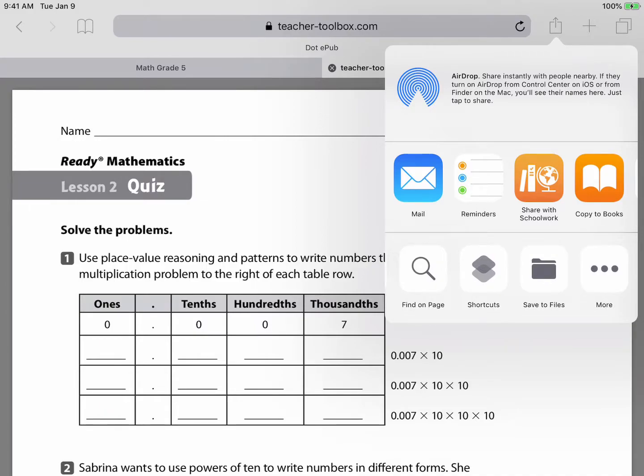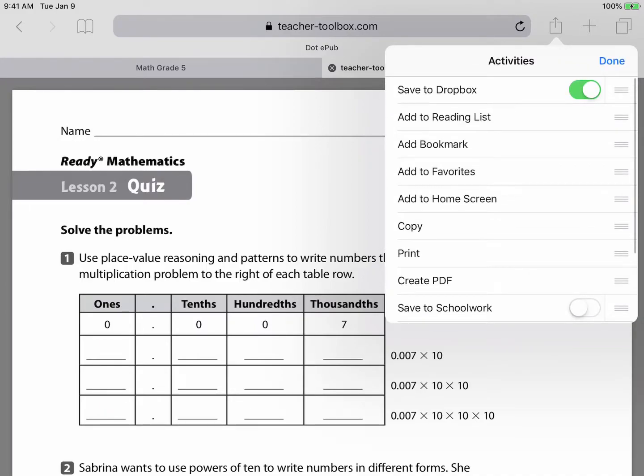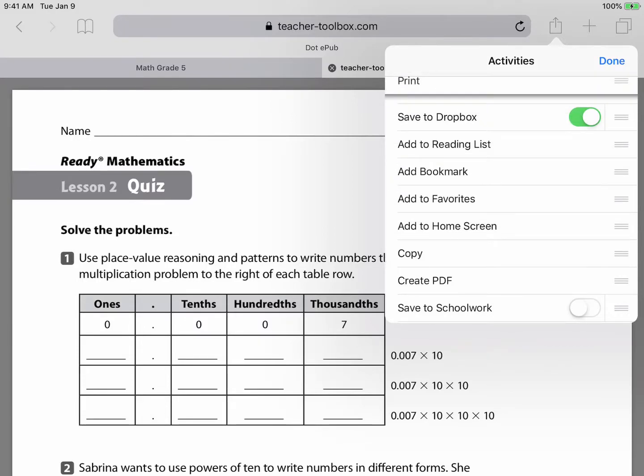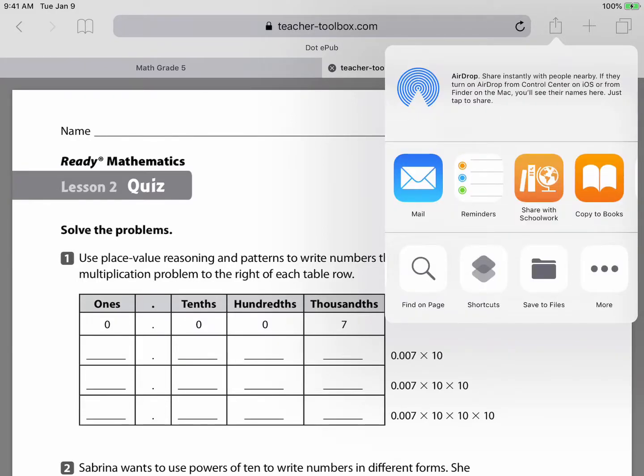Now if I go all the way over and tap more and then use the three lines on the right, I can actually drag that up to the top. I do that because I'm going to use this often as a teacher. I want to be able to annotate over this. And I did the wrong one.